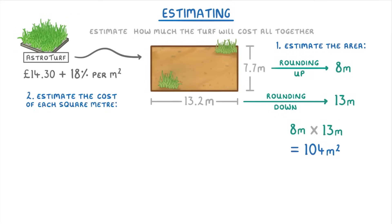Next we can estimate the cost of each square metre of turf, by assuming each square metre is £14 instead of £14.30, and that the tax is 20% rather than 18%. So by adding 20% to £14, we get £16.80, or rounded up, £17 per square metre of turf.